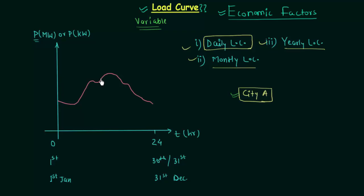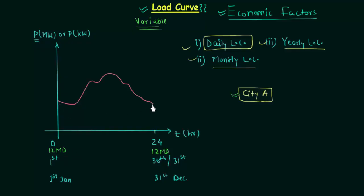Throughout the day the power demand will vary, and after 9–10 PM the demand will decrease. Regarding the x-axis: 0 hour is 12 midnight, and 24 hours is also 12 midnight. So the starting point and the ending point are the same and will have the same power demand.